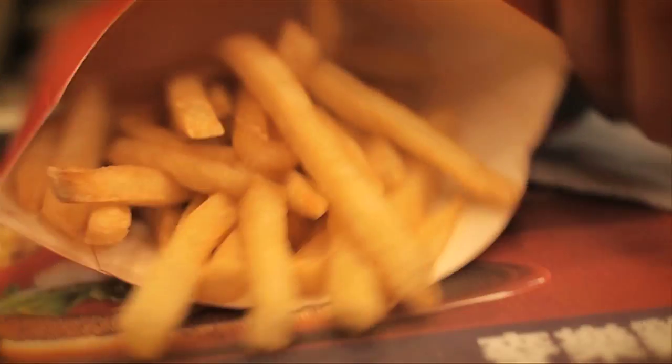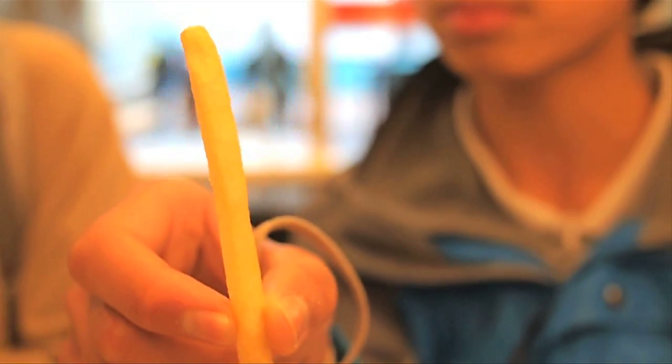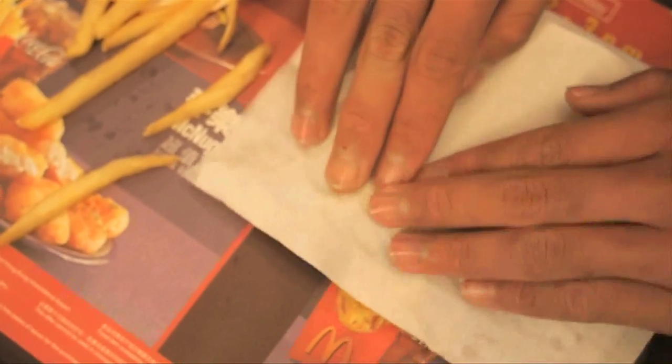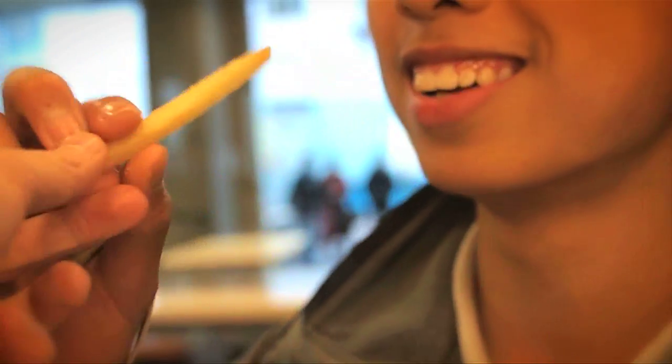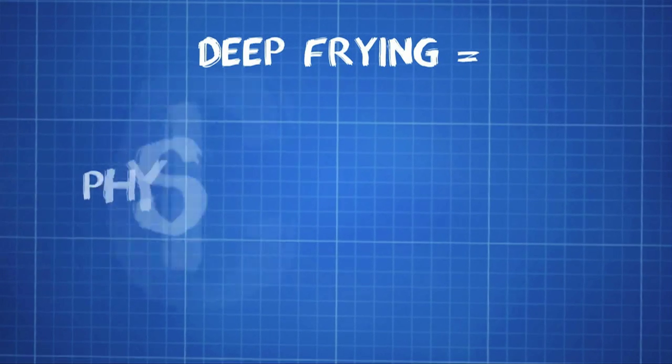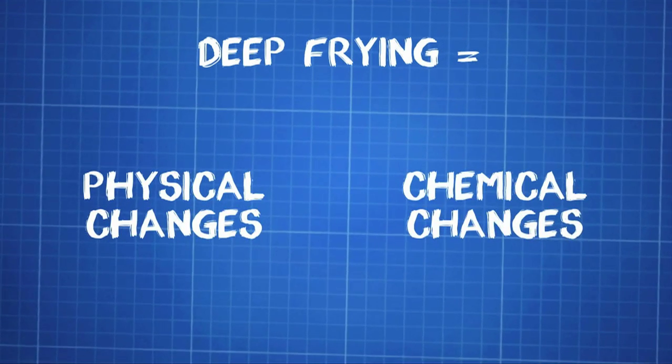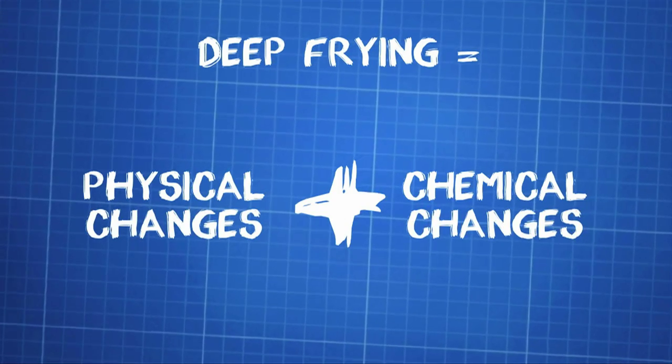We went out and observed the difference between normal potato and fried potato. We found out that deep-fried potato is oilier, has a gold-brown color, and has some special flavorings that we can't find in normal potato. From these observations, we concluded that during deep-frying, potato must have undergone many physical changes and chemical changes.